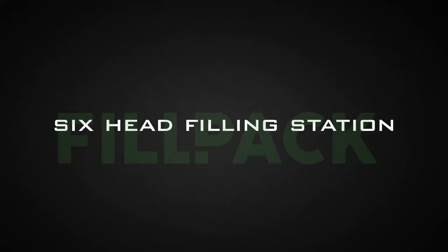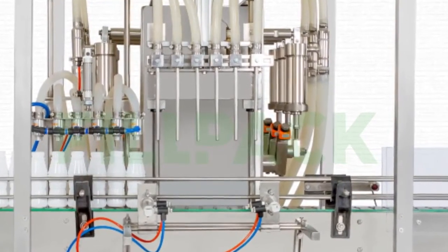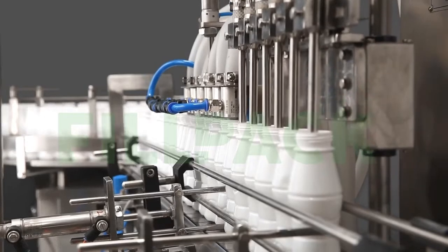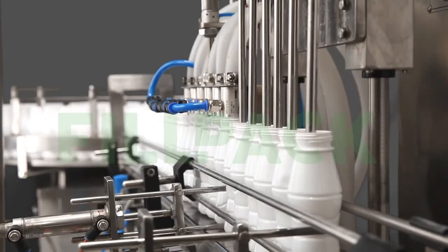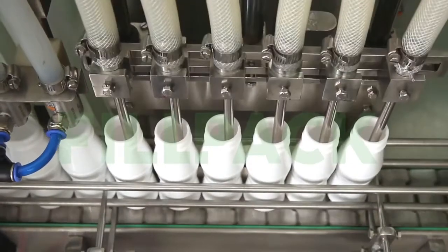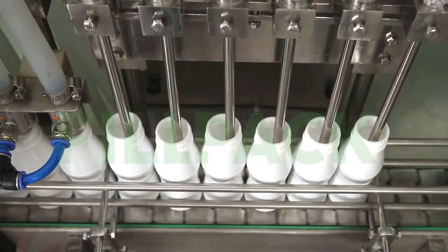Six Head Filling Station: Bottles coming in from the air jet cleaning will come to the filling machine. On this machine, six bottles at a time will be filled through anti-drip nozzles as per the set volume.